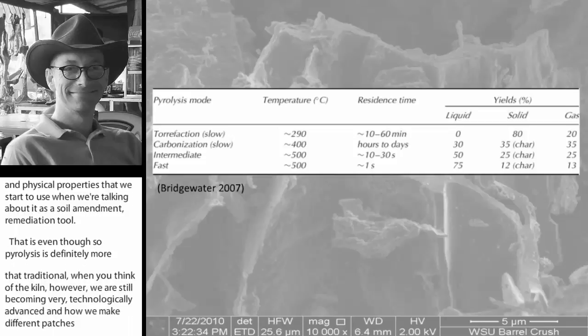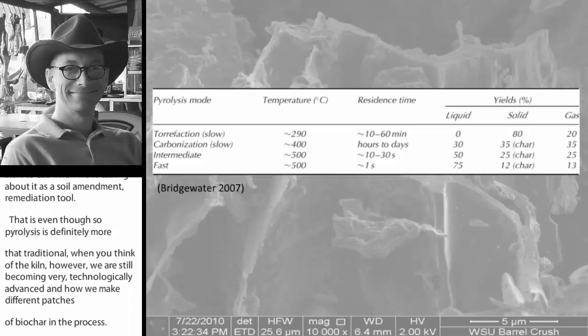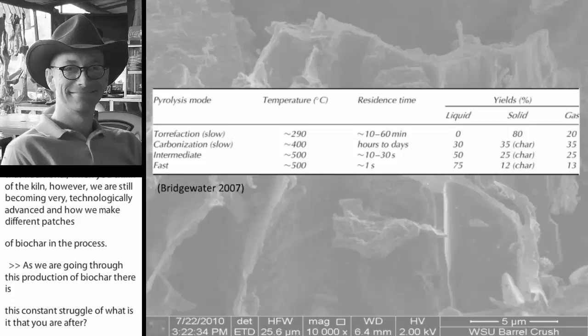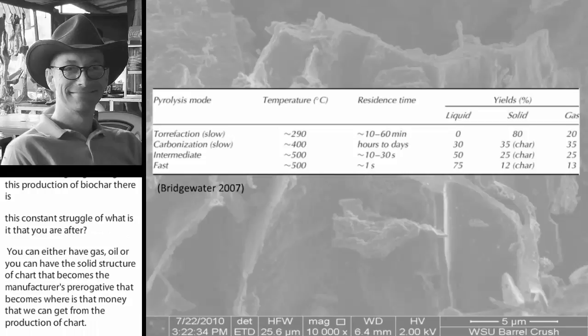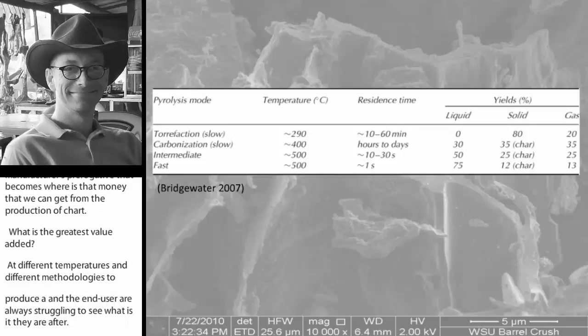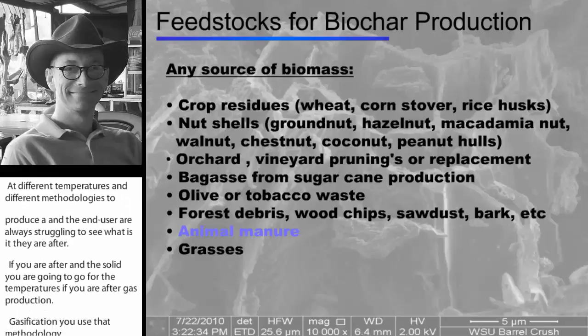One of the general ideas is that, for the most part, slow pyrolysis gives us some of the best chemical and physical properties that we start to use when we're talking about it as a soil amendment, as a remediation tool. Even though slow pyrolysis is definitely more that traditional when you think of a kiln, we still are becoming very, very technologically advanced in how we make different batches of biochar.